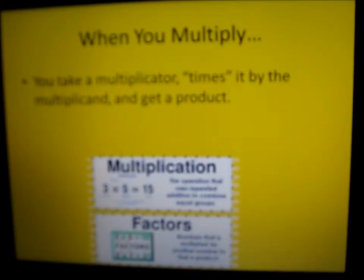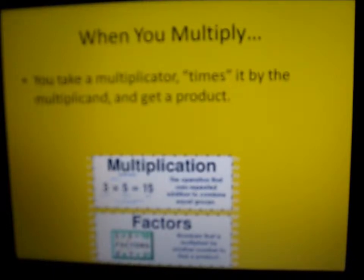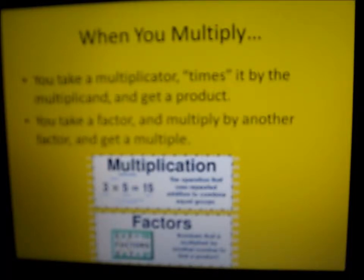When you multiply, you take a multiplicator, times it by the multiplicand, and get a product. Or, you take a factor and multiply it by another factor and get a multiple. These are important terms that you need to remember.